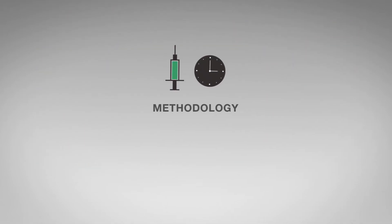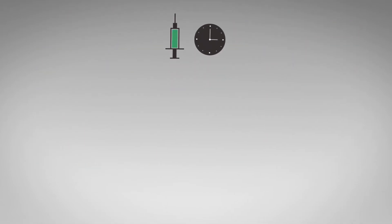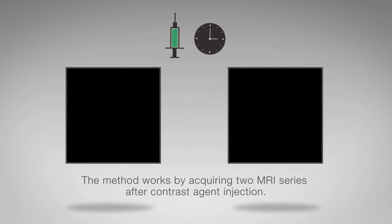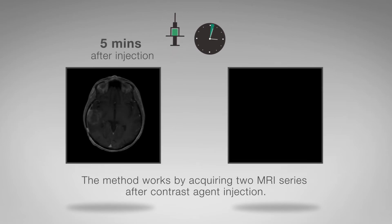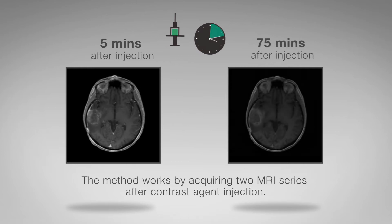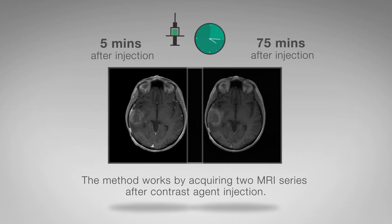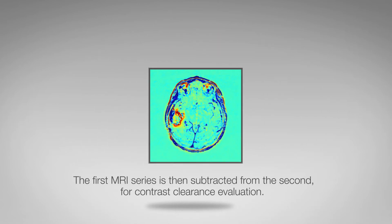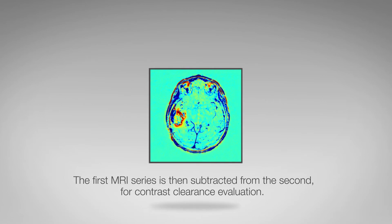The method works by acquiring two MRI series — one at 5 minutes and another at 75 minutes after injection of a standard dose of contrast agent. The first series is then subtracted from the second for contrast clearance evaluation.